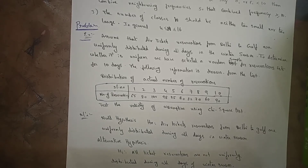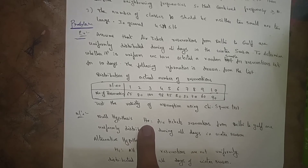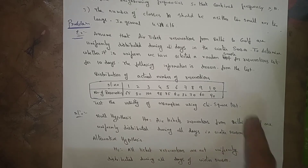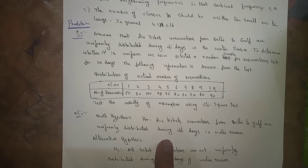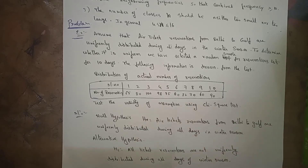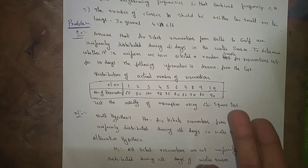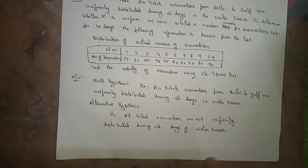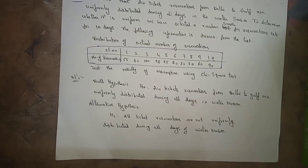Solution. Null hypothesis H₀: Air ticket reservations from Delhi to Gulf are uniformly distributed during all days in the winter season. Alternative hypothesis H₁ — which is quite opposite to H₀ — H₁: Air ticket reservations are not uniformly distributed during all days of the winter season.